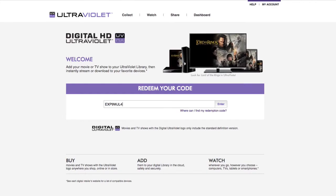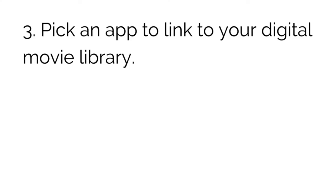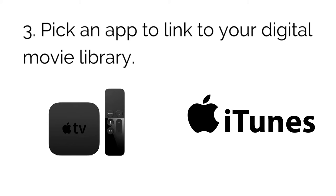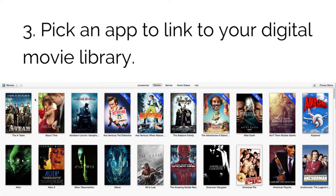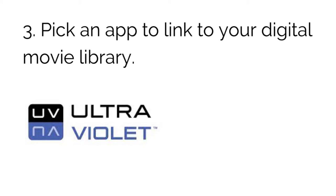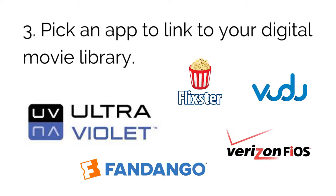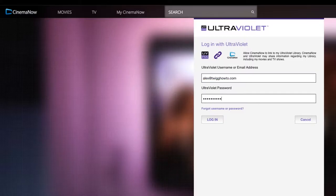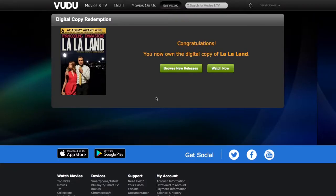Lastly, step three: pick your app to access your digital library. If you choose iTunes and Apple TV, there's no need for this — your library will just show up. If you choose UltraViolet, then pick an app and link your account. There are lots of options and most are free, but we're going to use Vudu.